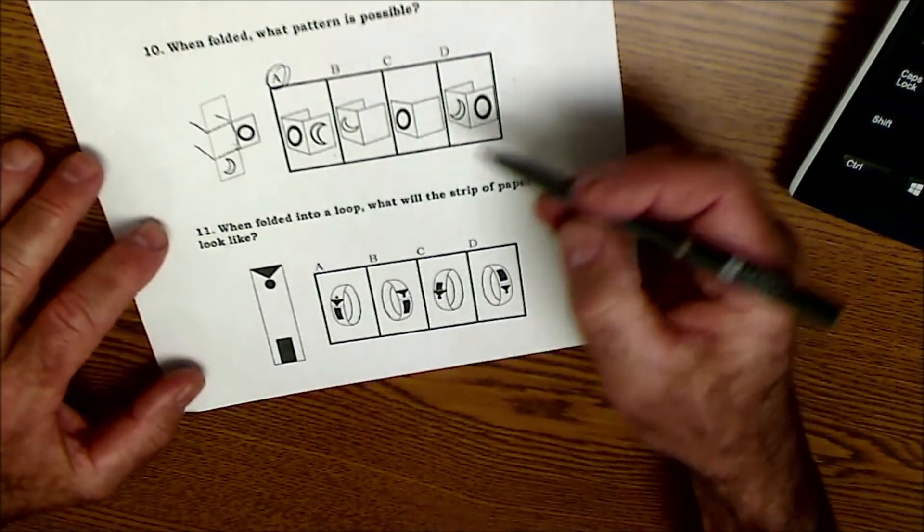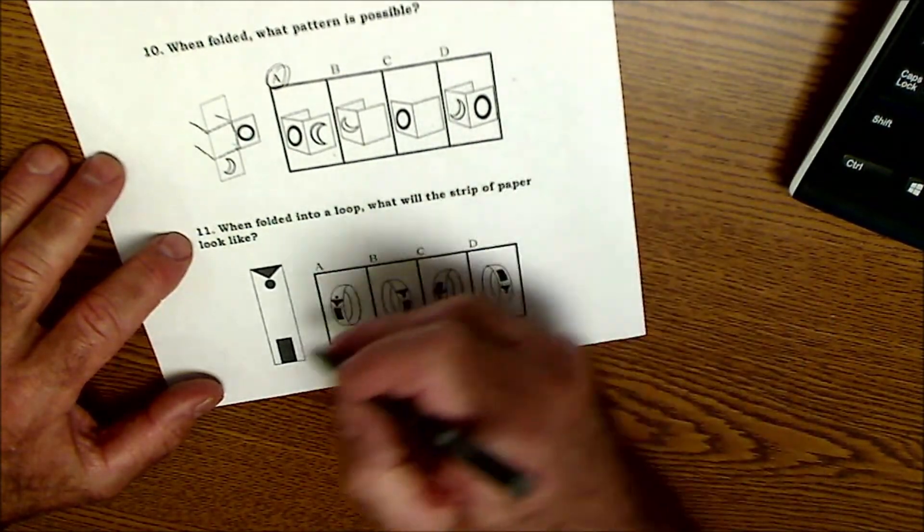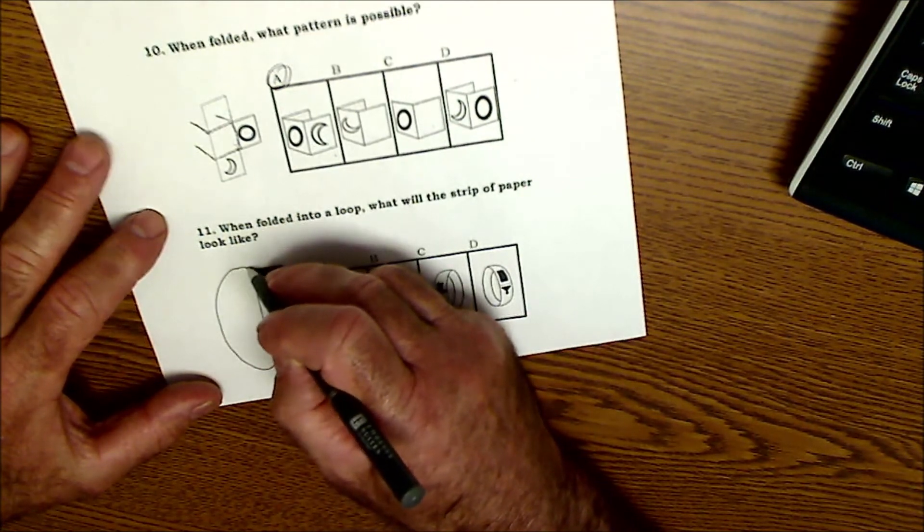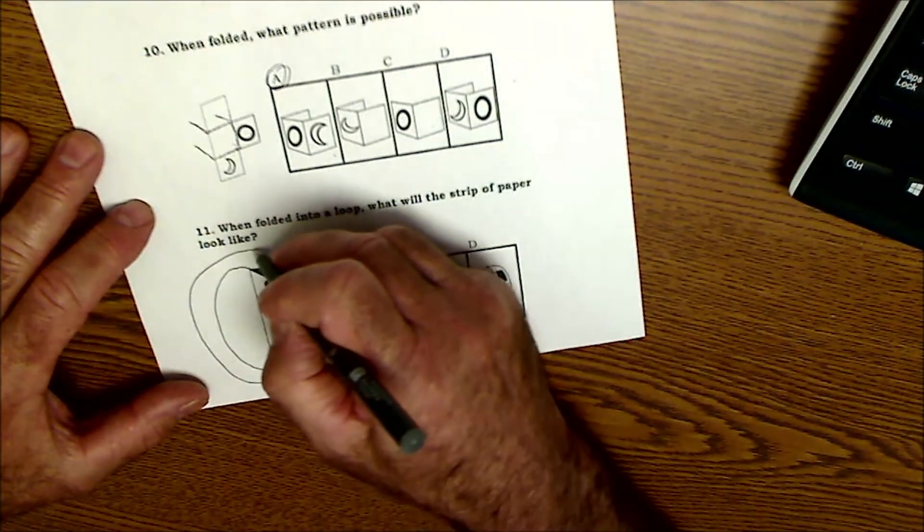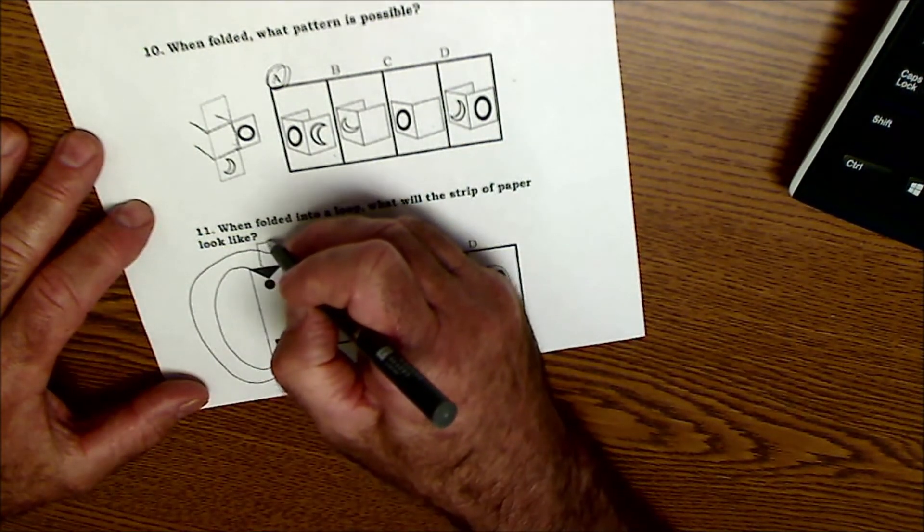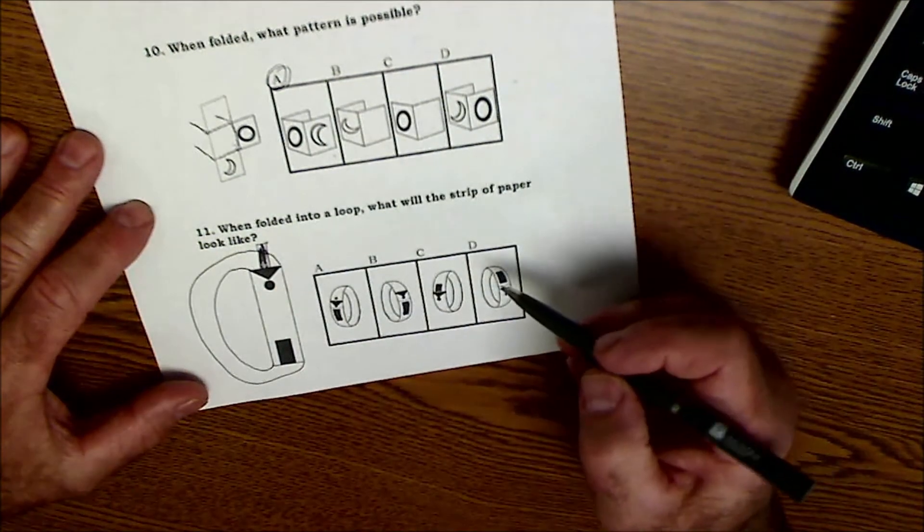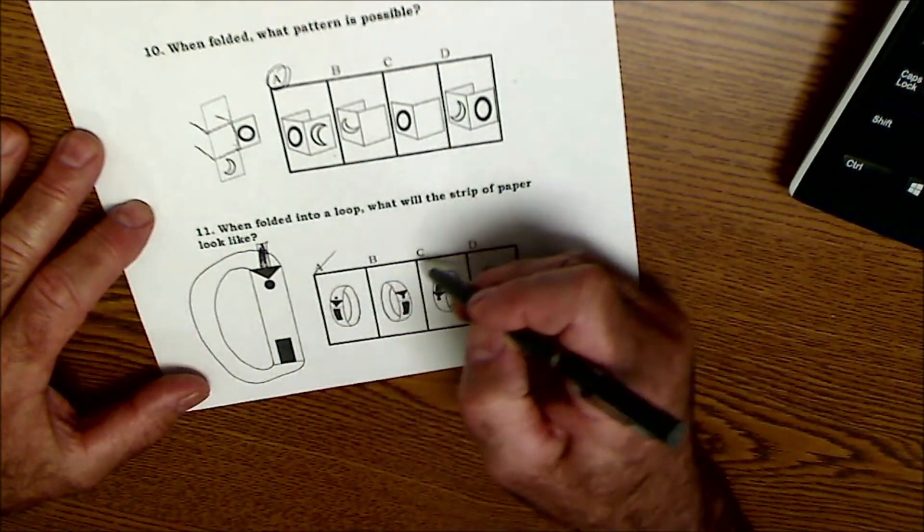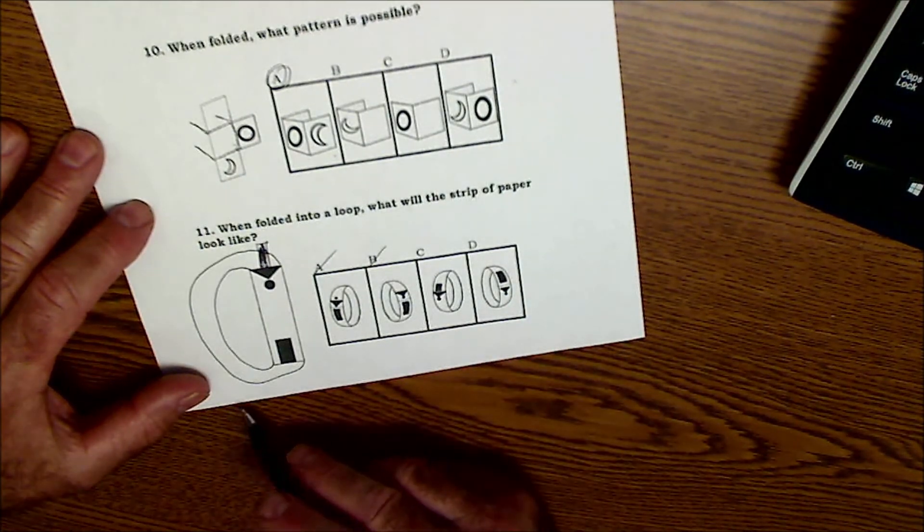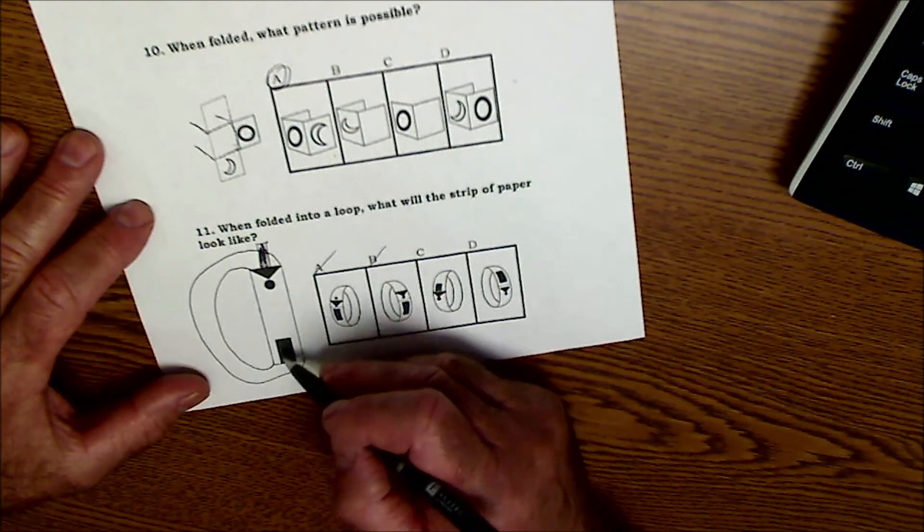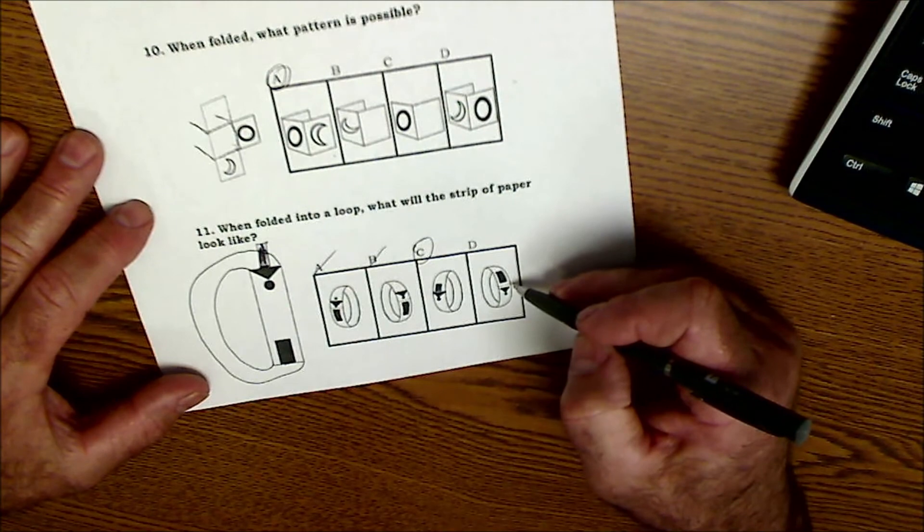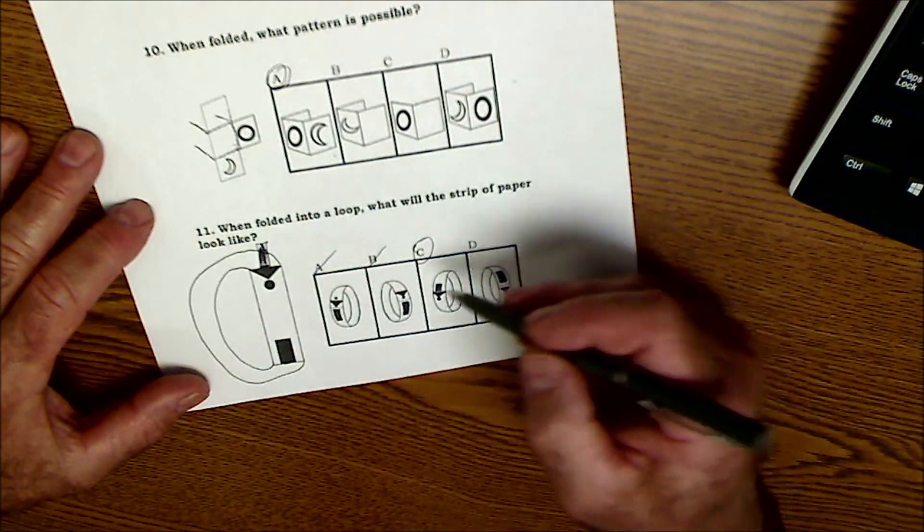And then lastly, number 11, when folded into a loop, what will a strip of paper look like? So you're taking this piece and bringing it right around here. All right? So I'm bringing it down like this. So I could see this rectangle would connect here and would look like that. So that's not it. That's not it. I could see that is it right there. And if they were to connect exactly, this thing ends here and this thing starts here. So it would have to be C without the gap there, D. There's no space in between them. So that would be answer C.